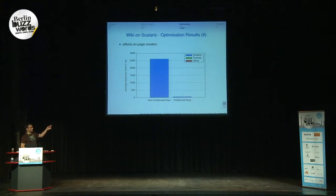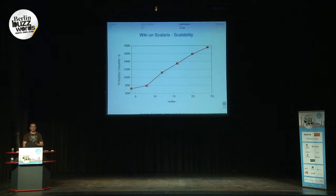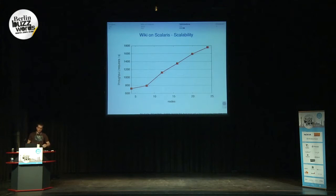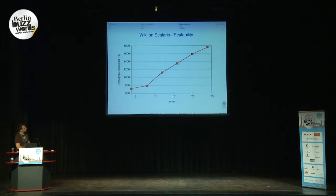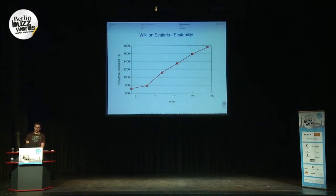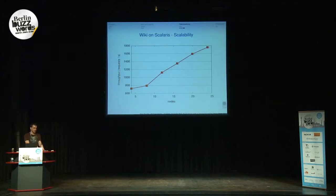Looking at the overall scalability: we benchmarked with an increasing number of nodes from 4 to 24. As you can see, the more nodes added to the system, the more requests served per second — it scales well. The scalability is not destroyed by the data model we chose, although it is not optimal. We still have those page lists, even though we partitioned them, but it works.